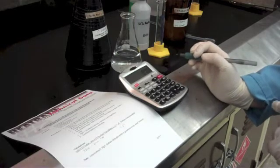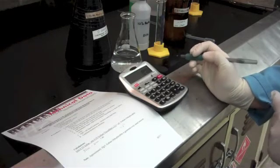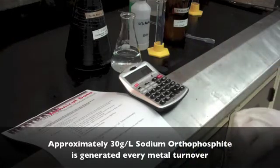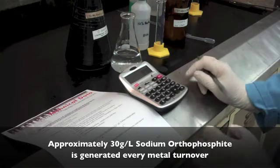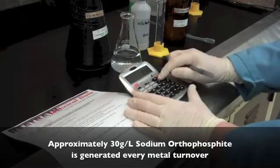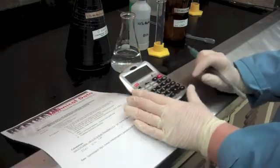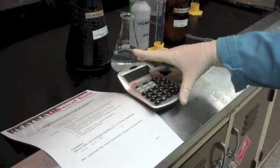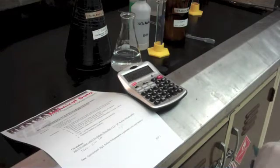For every metal turnover, approximately 30 grams of sodium orthophosphate is generated. So to find out the metal turnovers of your bath, divide your grams per liter by 30. This bath is at 6.6 metal turnovers.